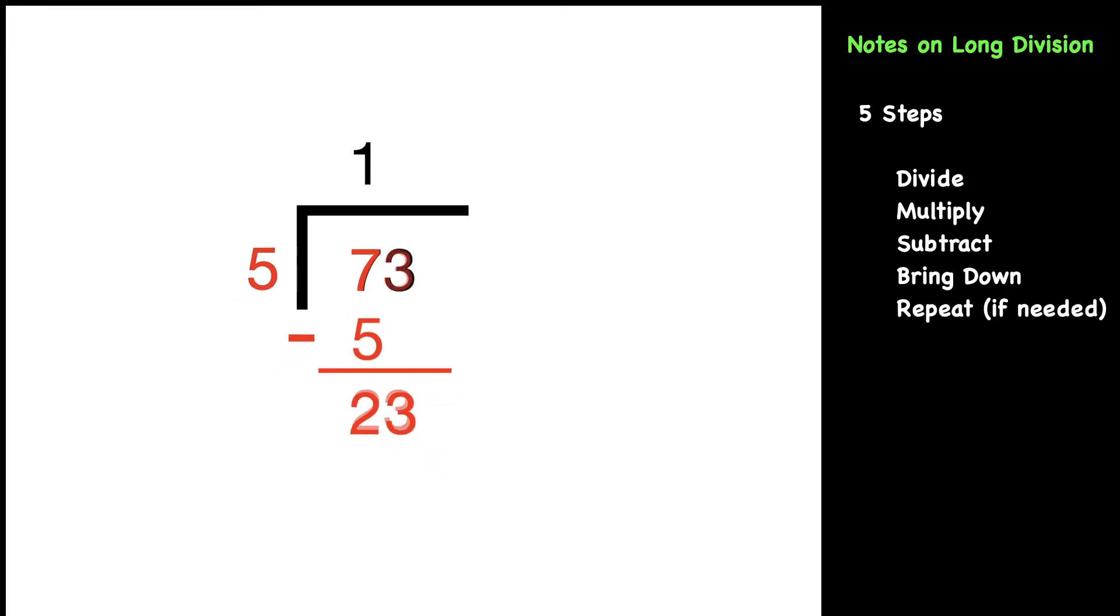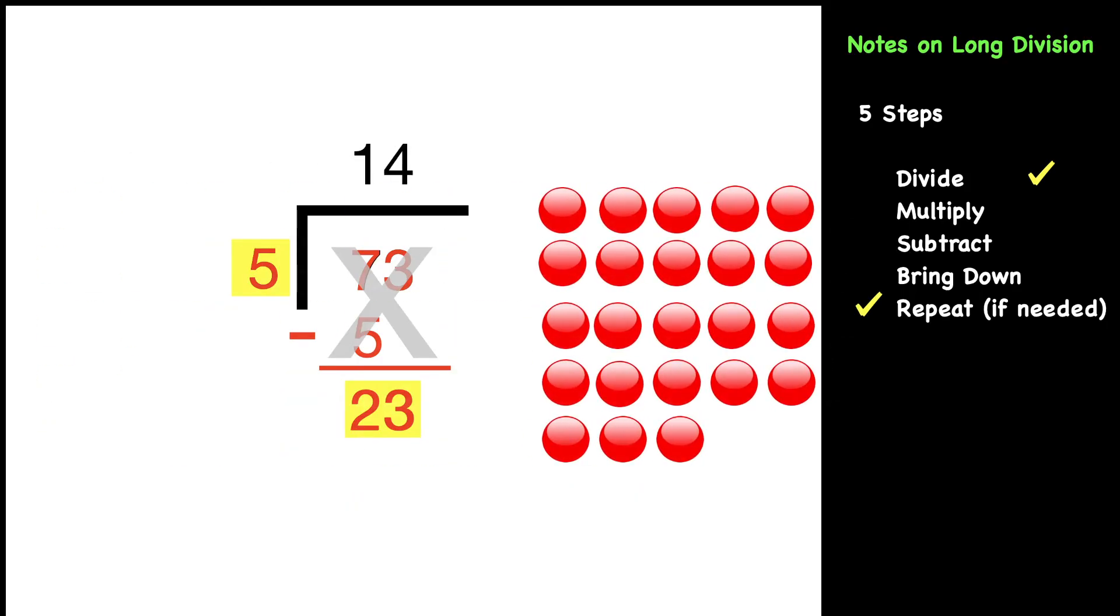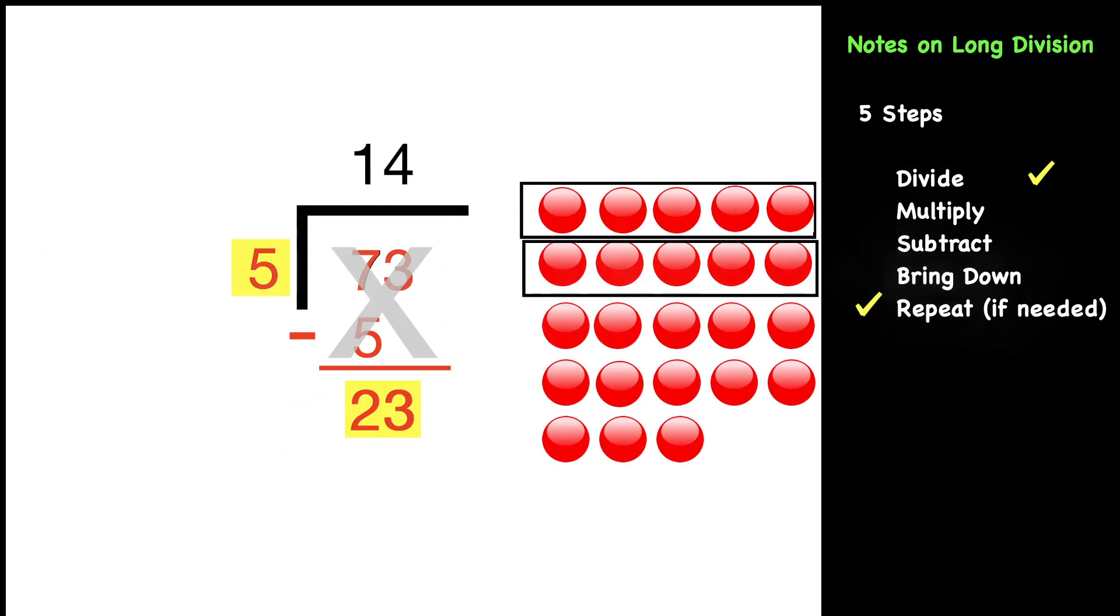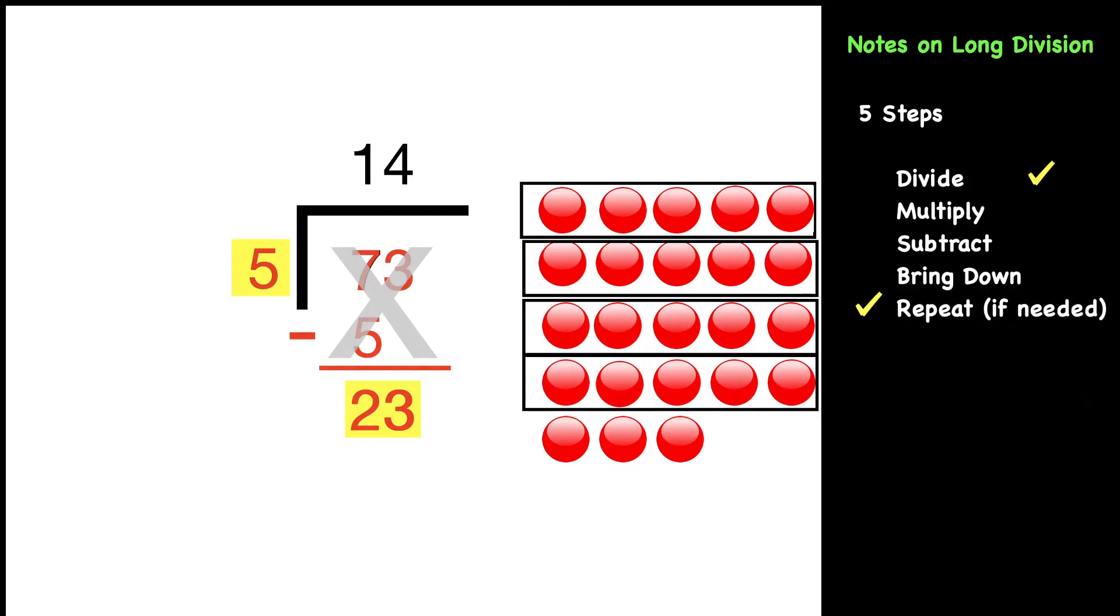Now we're going to repeat the steps, meaning we start with the divide step. We're focusing on the five and the 23. Ask yourself, how many groups of five can we get from 23? We can get four. We can show that with our red dots. We have four groups of five, and notice that we have three that are left over, but that's not a group of five.